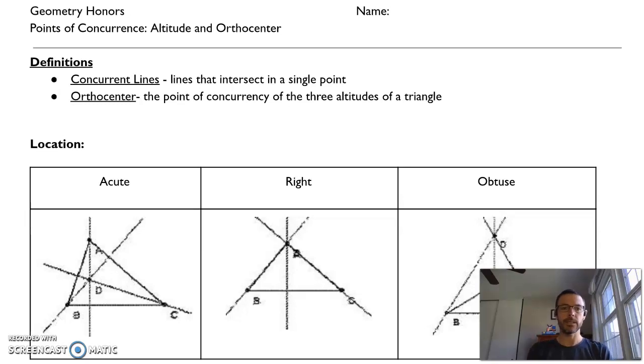We are into our fourth and final point of concurrency with regard to triangles, and that is called the orthocenter.